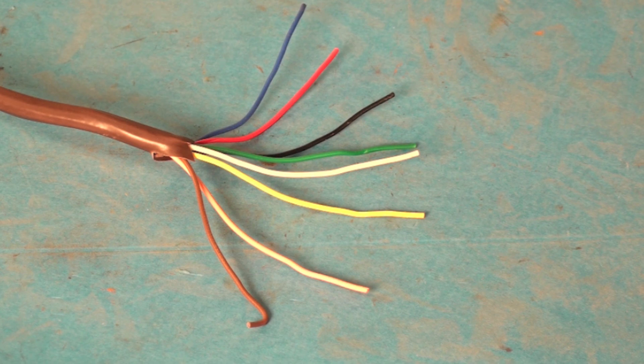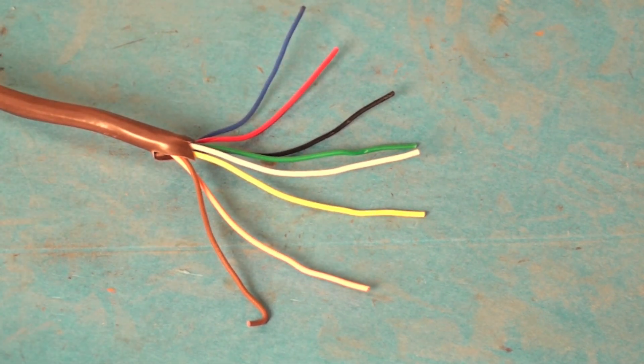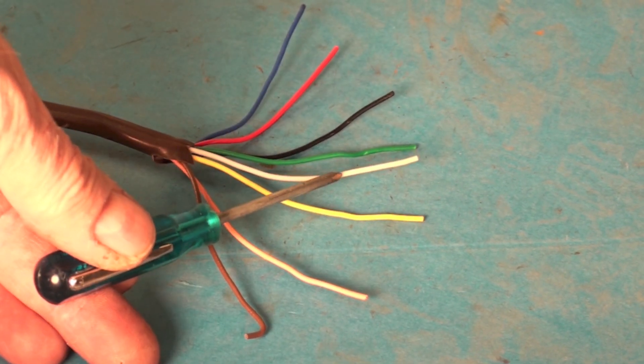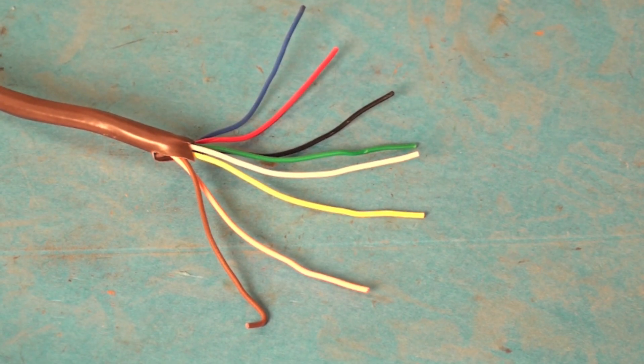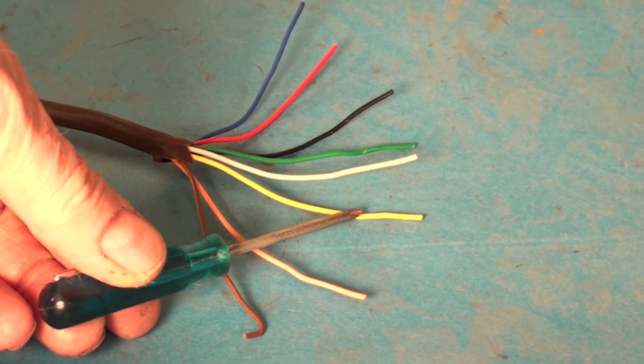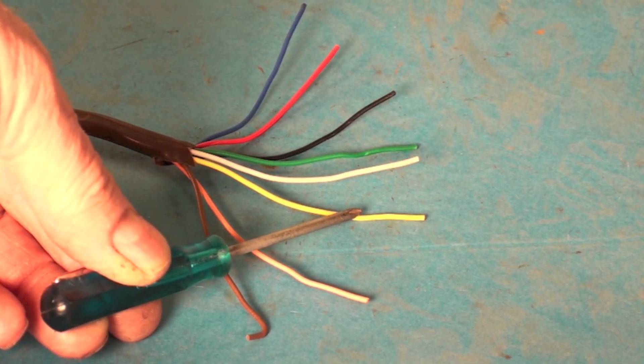The red is power, usually switch power goes to the thermostat. White is heat at whatever sort of furnace you have. Yellow is cool for air conditioning.